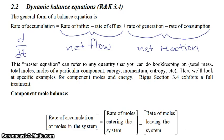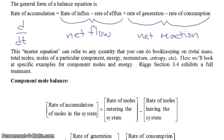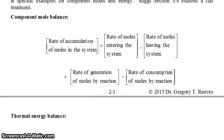For a component mole balance you would have the rate of accumulation of moles in the system equal to the rate of moles entering the system minus the rate of moles leaving the system plus the rate of generation of moles by the reaction minus the rate of consumption of moles by another reaction. So the way that would work out as you're actually writing down this equation,